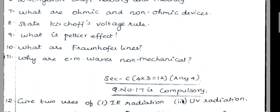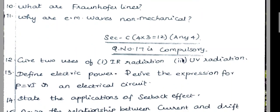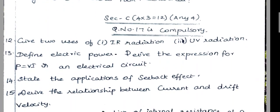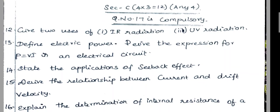Next, Section C — 17 question compulsory, other normal question on the show. Give up. Twelve question — give two uses of IR radiation and UV radiation. Thirteen question — define electric power, derive the expression for P equals VA in an electrical circuit.